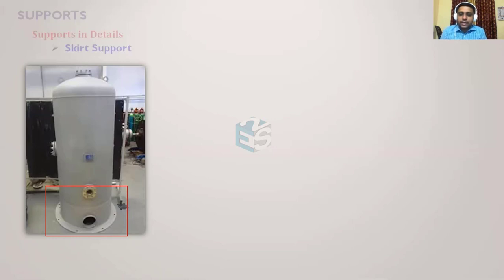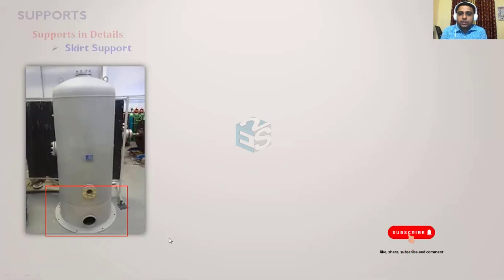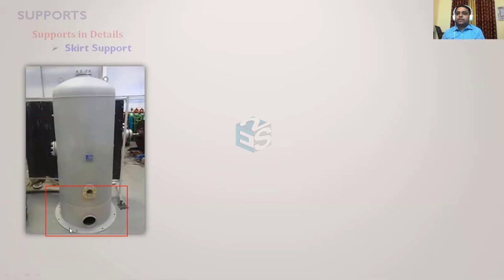Whatever moments come at the base plate or skirt are transferred to the base plate and through it to the foundation. The section modulus of that plate is calculated to determine how much resistance is required. When loads are lower and height and weight are not much, only a base ring is sufficient; when equipment height and diameter are greater, other arrangements with gussets are needed.